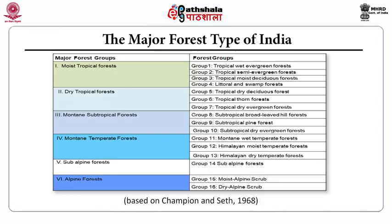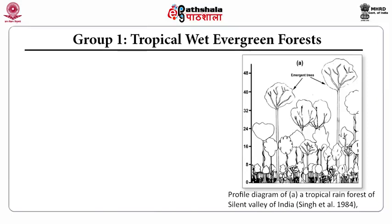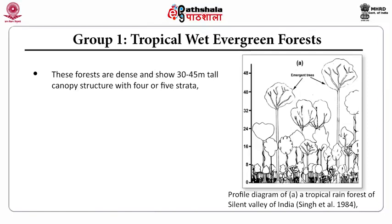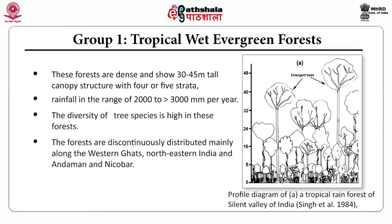This classification of forest types is based on Champion and Seth, 1968. Discussing Group 1, the tropical wet evergreen forests: these forests are dense and show 30 to 45 meter tall canopy structure with 4 or 5 strata. Rainfall is in the range of 2,000 to greater than 3,000 millimeters per year. Diversity of tree species is high. These forests are discontinuously distributed mainly along the Western Ghats, northeastern India, and the Andaman and Nicobar.